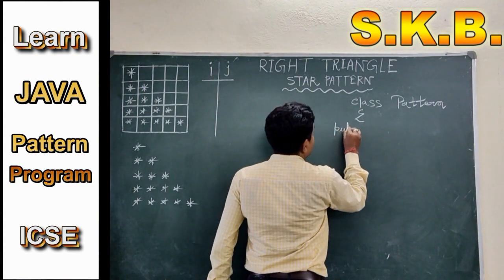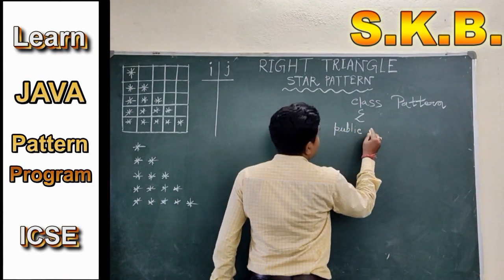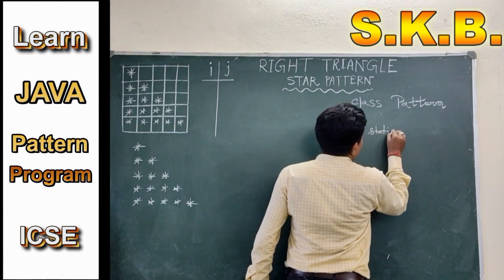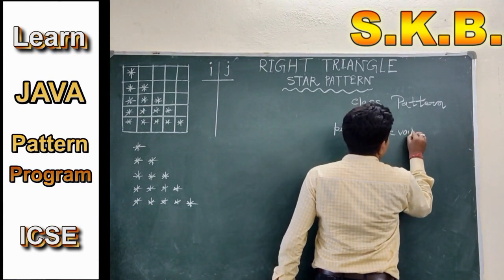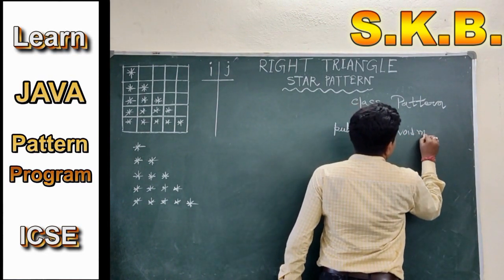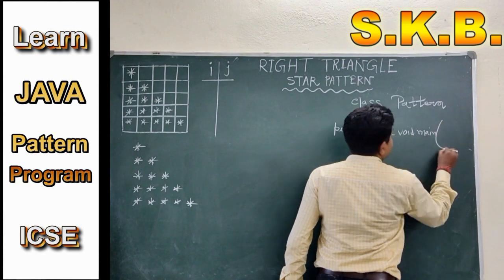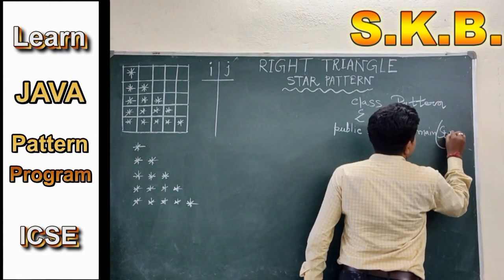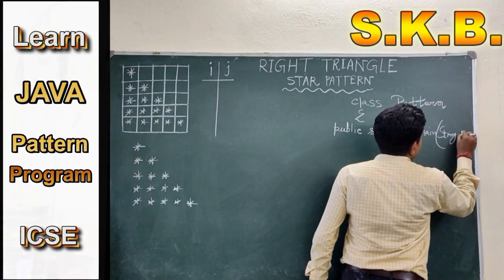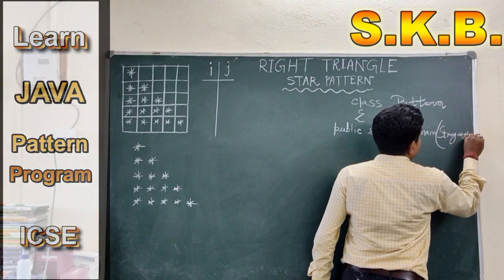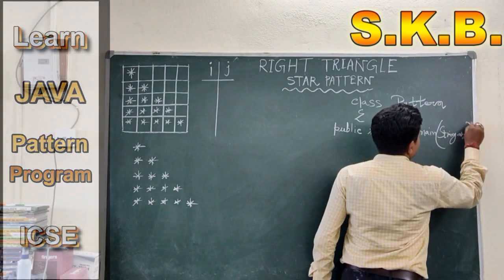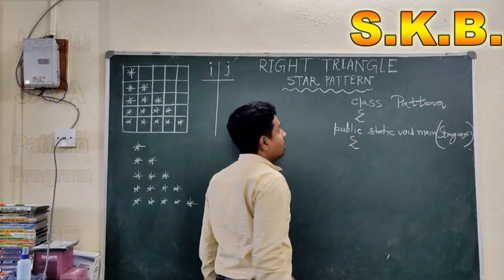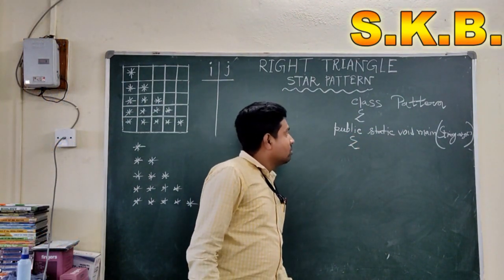Now: public static void main — pattern open — String args — third bracket open, close — pattern close. Now second bracket open.